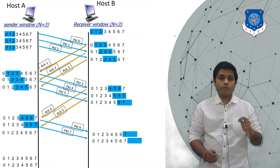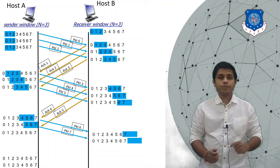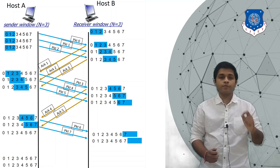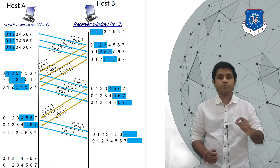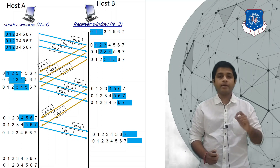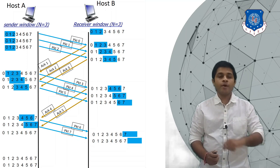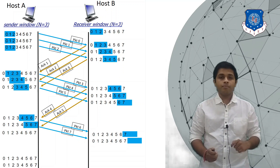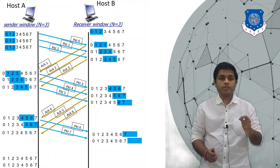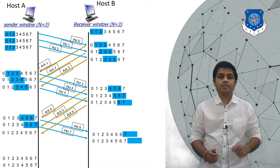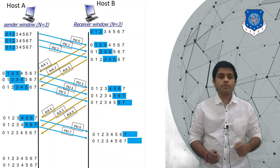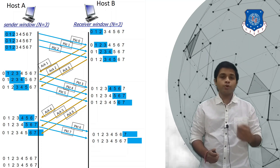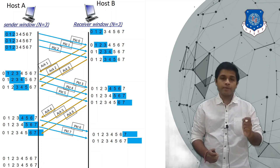The current position of the sender's window is at 5, 6, and 7 — those packets are in transmission currently and A has not received any acknowledgement for them. After some time B will send the acknowledgement for received packet 5, that is ACK 6. As A receives ACK 6, the window will slide, but A has no new packet to send and will still wait for the remaining acknowledgements.